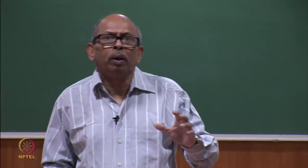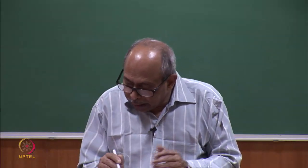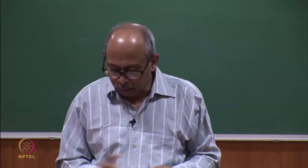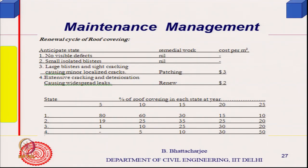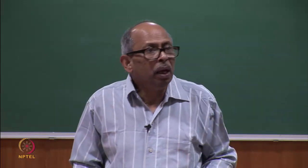I might show you more detail later related to condition assessment of structural systems. So the states are defined with their remedial actions and cost involved. For a roof covering system: anticipated state 1, no visible defects, cost per square meter zero; state 2, some isolated or large blisters, patching cost applies. If there are large blisters but only in some places, you do what is called patch repair — repair only those areas.